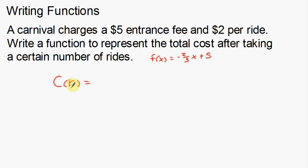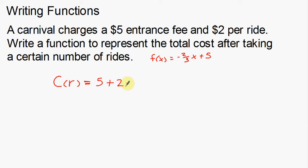Instead of using X like everyone else, I'm going to use R for my variable. You can start to see us building this function notation: C of R — the cost for all the rides — is equal to... So now we go back to our information: a carnival charges a $5 entrance fee and $2 per ride. It's going to cost me $5 right off the bat, plus $2 per ride.